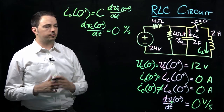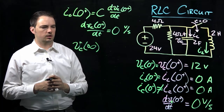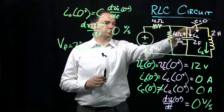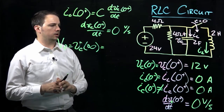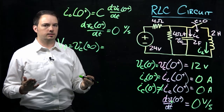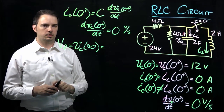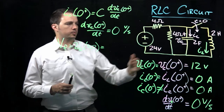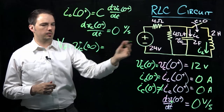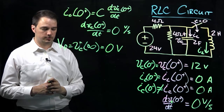Now considering the final condition — Vc as time goes to infinity, meaning after five time constants. Once the switch is closed, the inductor is in parallel with the capacitor. At steady state, an inductor acts as a short circuit, meaning the voltage across it is zero. Since the inductor is in parallel with the capacitor, the final voltage across the capacitor Vc(∞) is also zero volts.